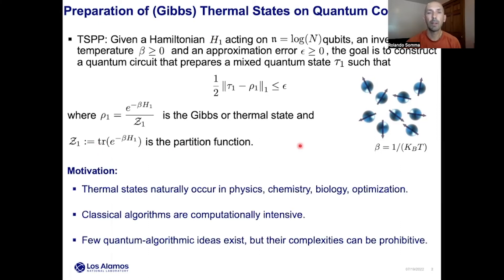This problem is very important for many reasons. Thermal states naturally occur in physics, chemistry, and biology; preparing them allows us to compute thermal properties. They also appear in optimization, for example when computing properties of low-eigenvalue eigenvectors of Hermitian matrices. There are classical algorithms for simulating thermal states of quantum systems, but these are computationally intensive and they only apply to a handful of quantum systems, as is the case of quantum Monte Carlo.